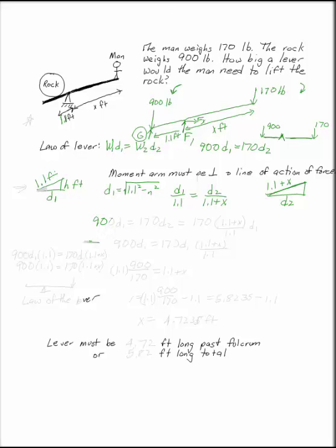900 d1 is 170 d2, which, if I solve my similar triangles for d2, gives me 170 times 1.1 plus x over 1.1 d1.